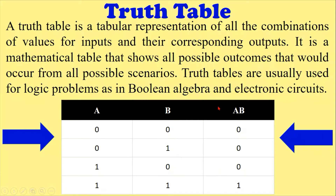First of all, the definition of truth table: a truth table is a tabular representation of all the combinations of values for inputs and their corresponding outputs. It is a mathematical table that shows all possible outcomes that would occur from all possible scenarios. Truth tables are usually used for logic problems as in Boolean algebra and electronic circuits. In tabular form, there are different rows and columns with different values according to the inputs, and the output is on the rightmost column.